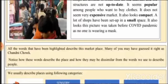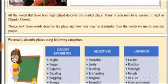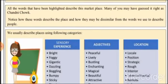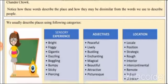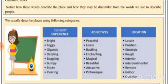This picture was taken before the COVID pandemic as no one is wearing a mask. All the words that have been highlighted describe the marketplace. Many of you may have guessed — it is written as Chandni Chowk. Notice how these words describe the place.